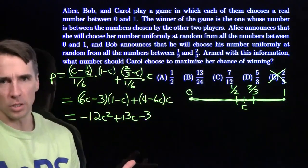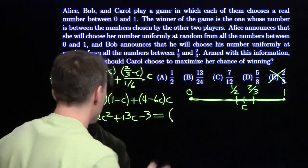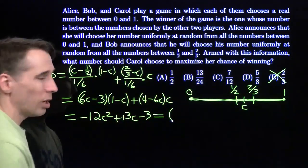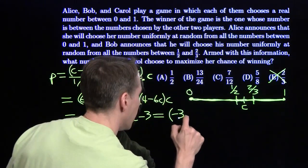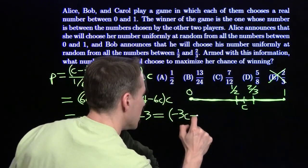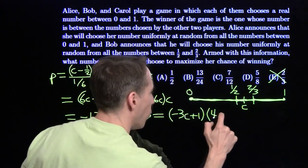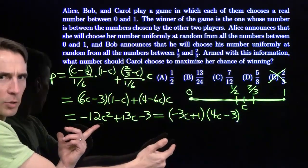I could complete the square, but I can factor this. I see 13, that's 9 + 4. I see this 12, that's 3 and 4. I've got (-3C + 1) times (4C - 3). Multiply this out, I get this quadratic.